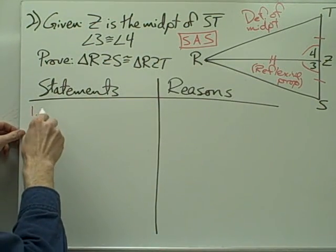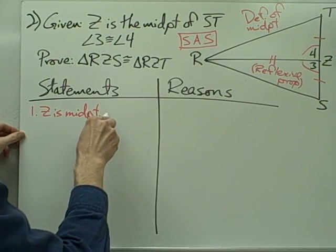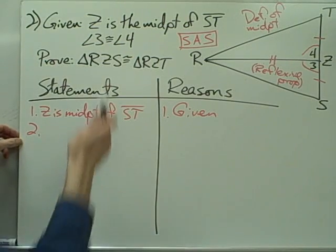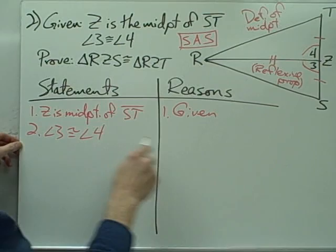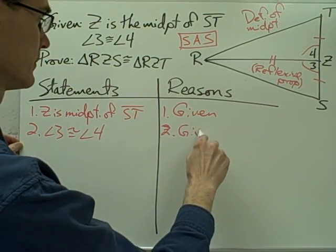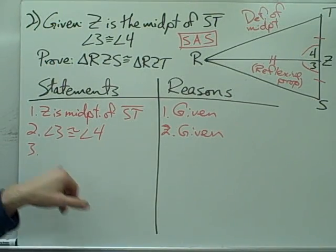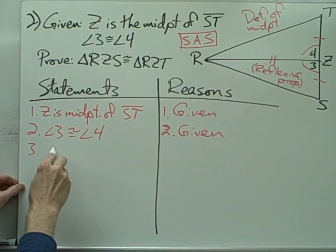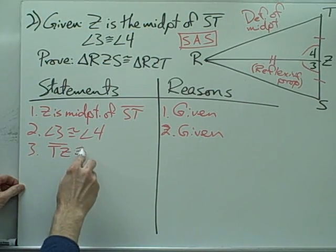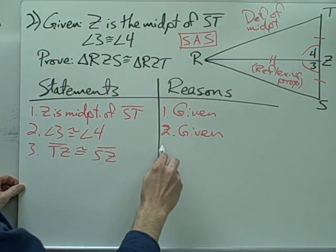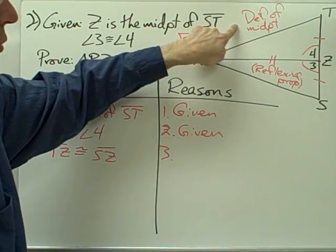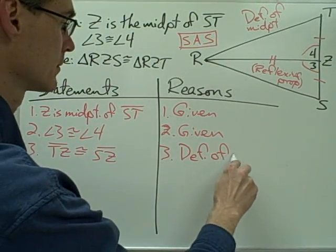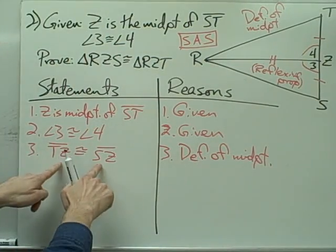Z is the midpoint of segment ST — that's given. Angle three is congruent to angle four — that's given. Now I need to say that segment TZ is congruent to segment SZ. How do I know these two segments are congruent? I know they're congruent by the definition of a midpoint — since Z is the midpoint of ST, by the definition of a midpoint, these two segments must be congruent.